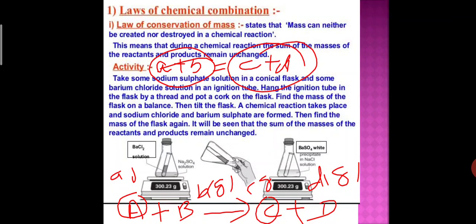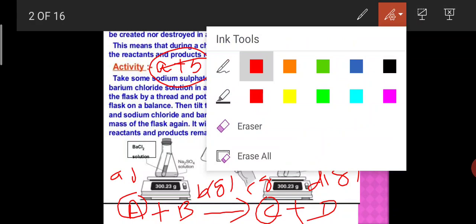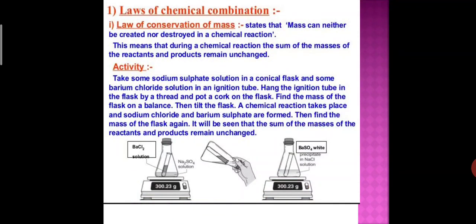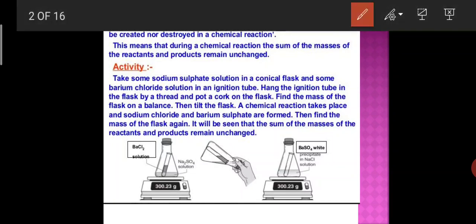The mass will not be affected at all — the mass before the reaction and after the reaction will be the same. There is no detectable loss or gain in total mass of the substance during a chemical reaction. During a chemical reaction, the sum of the masses of the reactants and the products remains unchanged. We will do an activity based on the Law of Conservation of Mass. Take some sodium sulfate solution in a conical flask.